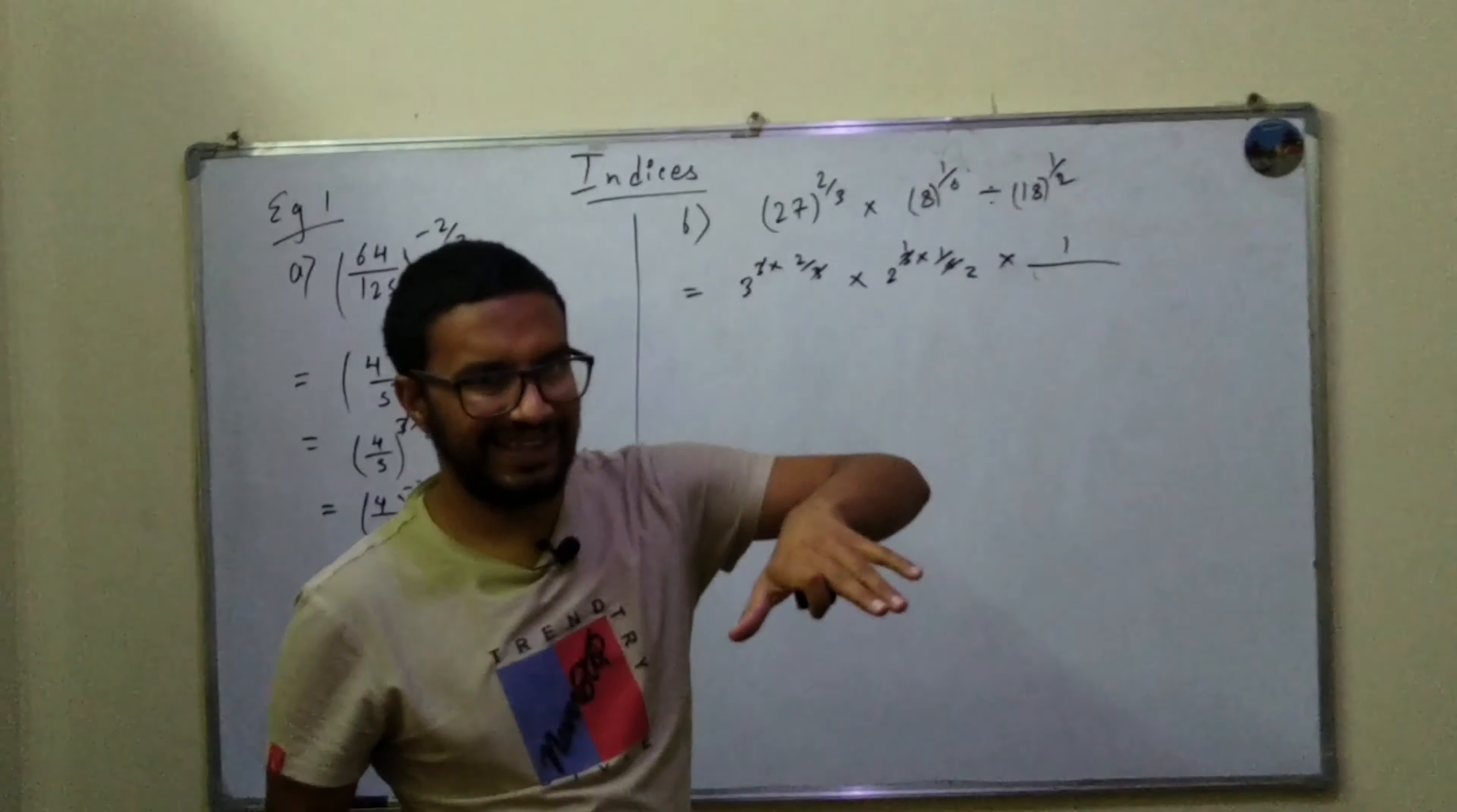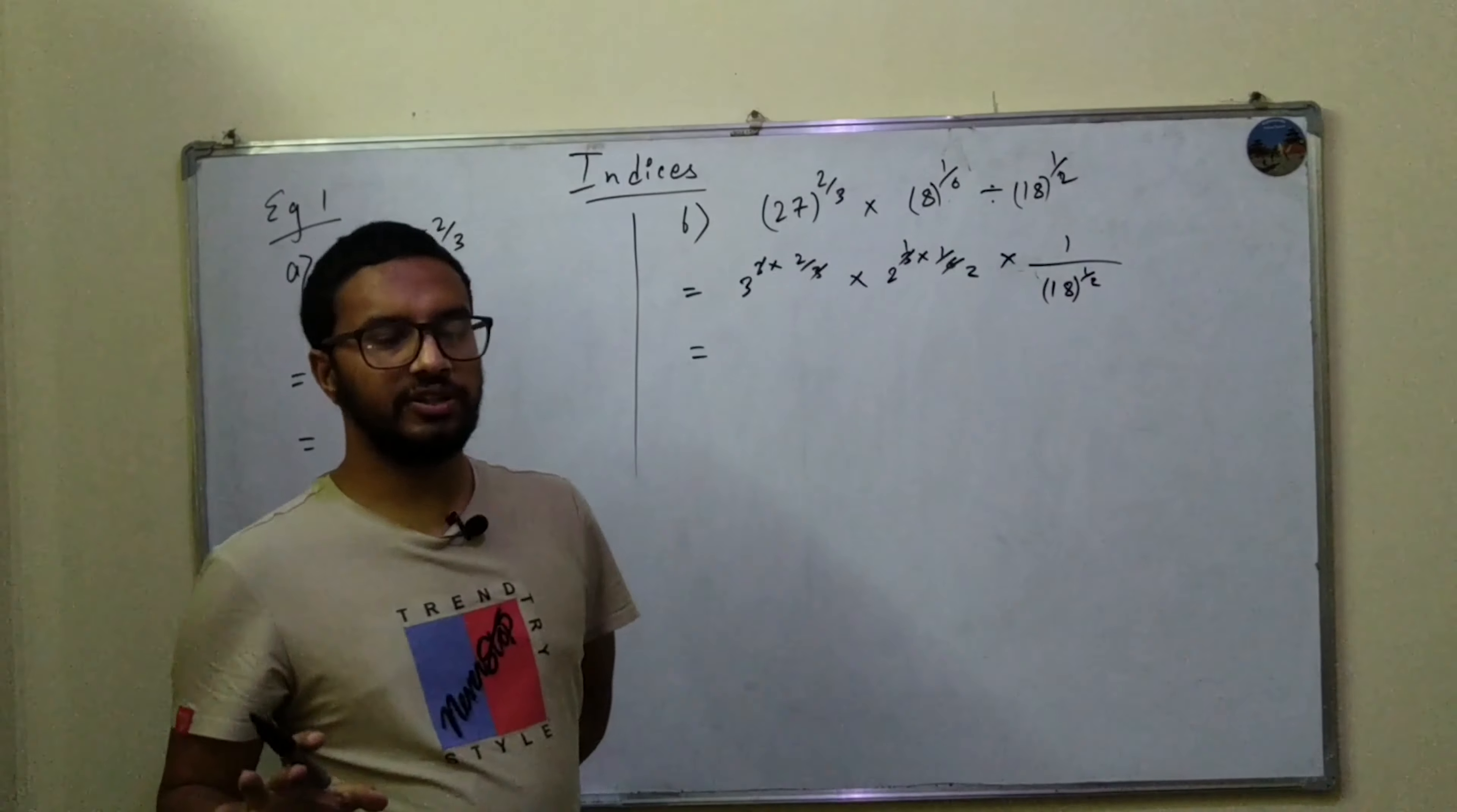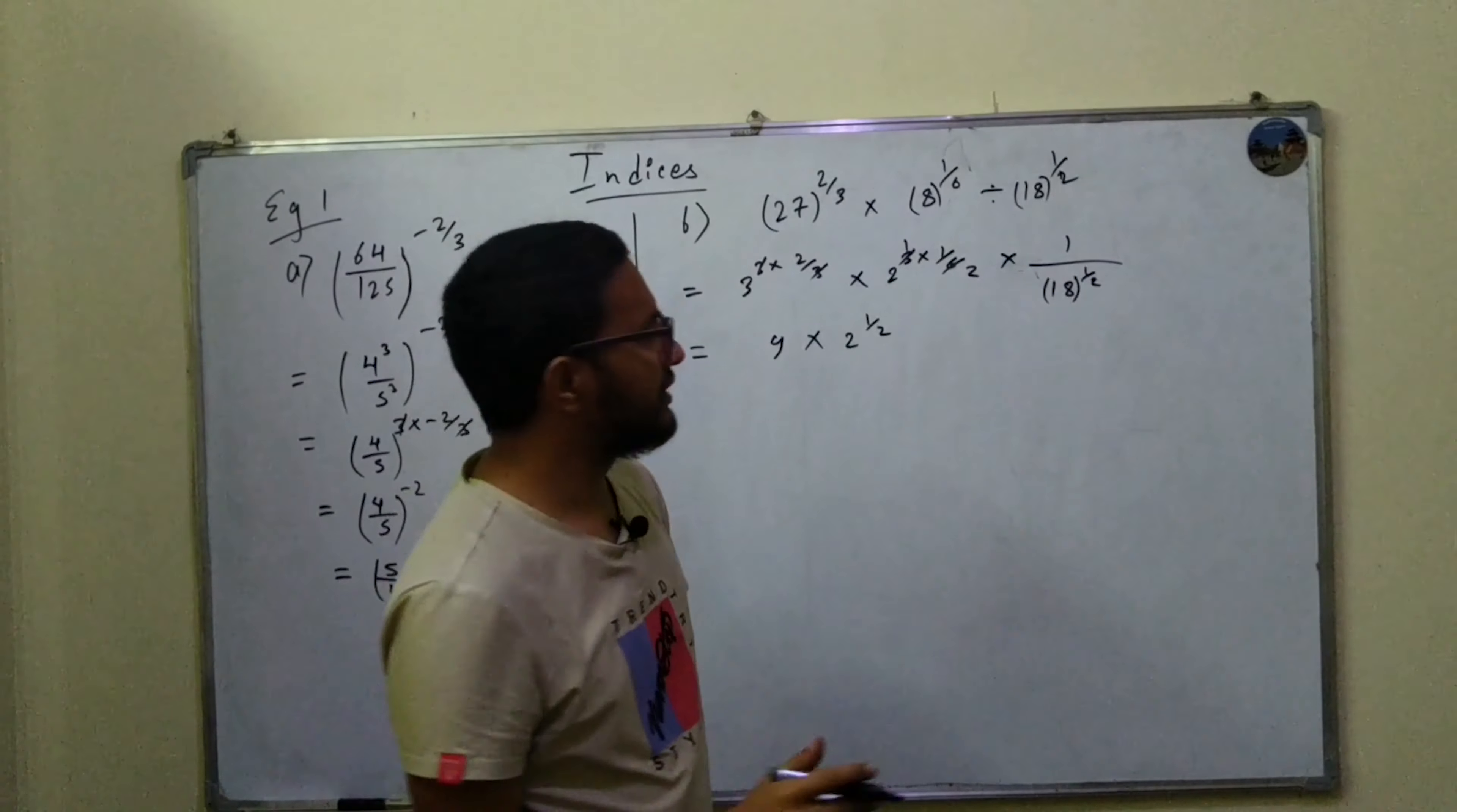This is 1 by 1 by 2, so let's change it over to 18, 1 by 2. After this, what we can do is this will be 9, so 3 squared will be 9 times 2 to the power half.